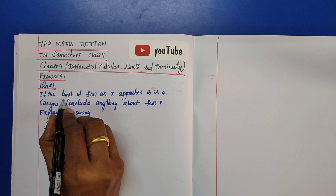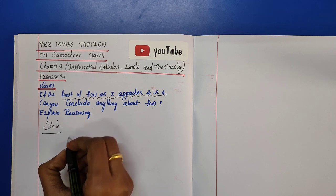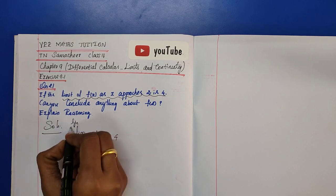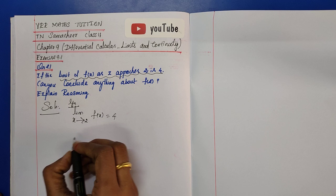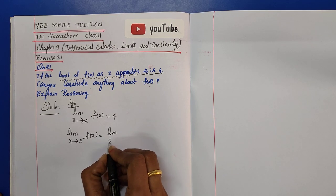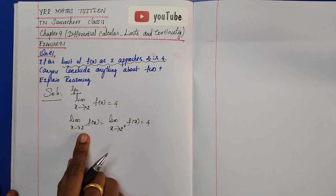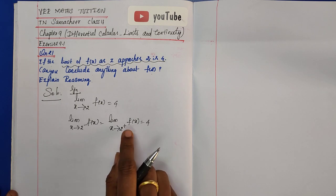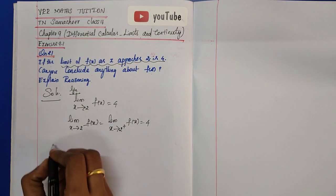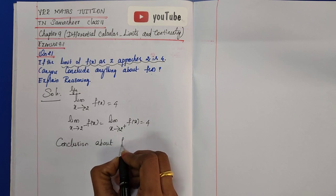Solution. The given condition is: limit of f(x) as x approaches 2 is 4. This means the left-hand limit as x tends to 2 minus equals the right-hand limit as x tends to 2 plus, and both equal 4. The question asks: can we draw any conclusion about f(2)?